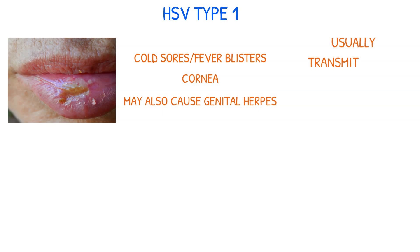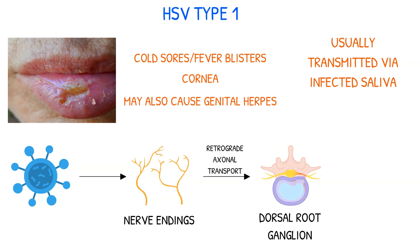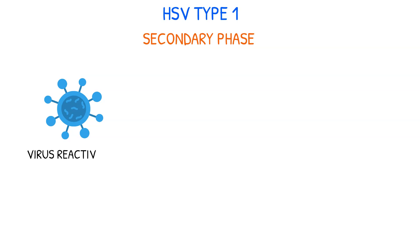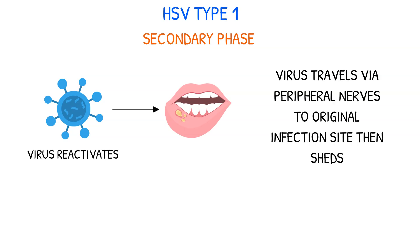HSV-1 is typically transmitted through contact with infected saliva. During the initial infection, the virus enters sensory nerve endings and travels through retrograde axonal transport to the dorsal root ganglion, where it establishes lifelong latency. In the secondary phase of HSV-1, the virus reactivates, leading to the recurrence of lesions at the same site. The virus travels down peripheral nerves to the original infection site where it is shed.